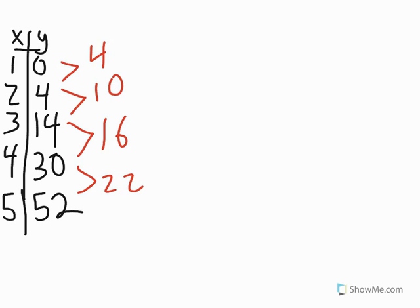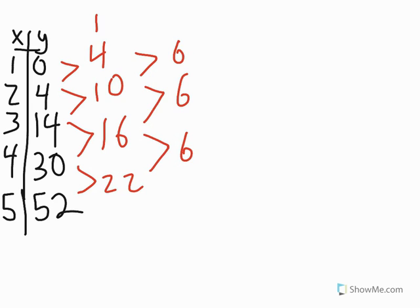Since these numbers aren't all the same, we know it's not degree 1 and we have to keep going. So we do 22 minus 16, which is 6, and 16 minus 10 is 6, and 10 minus 4 is 6. So we ended up with all 6's here, which means that since this is the second difference, we had 1 here and this is the second one.